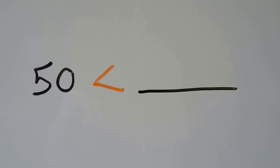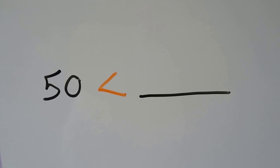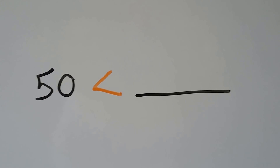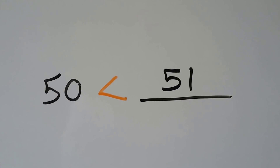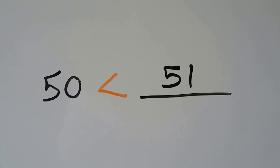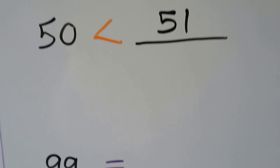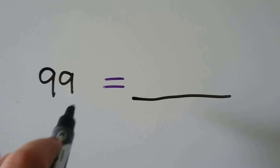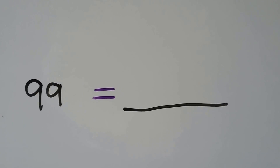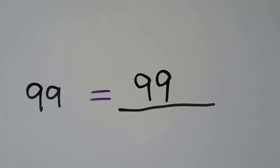50 is less than some number — we could use any number that is bigger than 50. We could say 51, 52, 53, 54, or even 100. 50 is smaller than 100, isn't it? Any of those numbers would make it true. 99 is equal to — it has to have the same tens and ones. 99 is equal to 99.